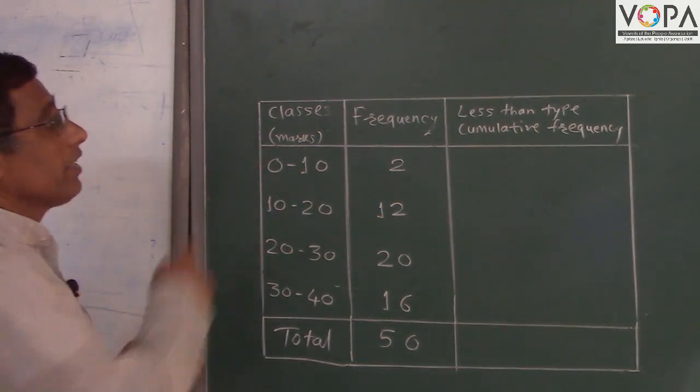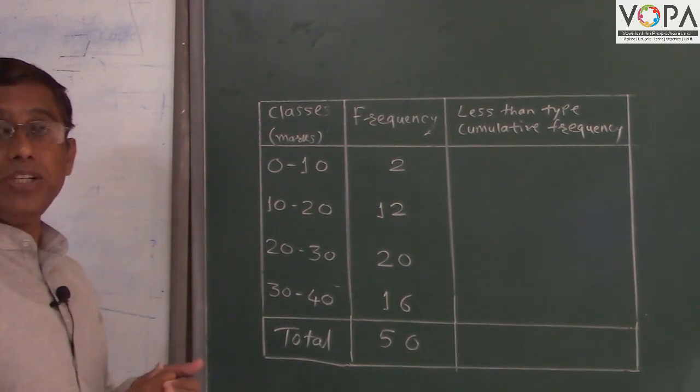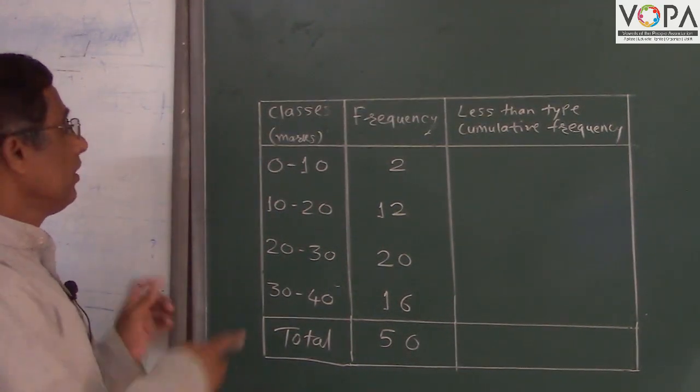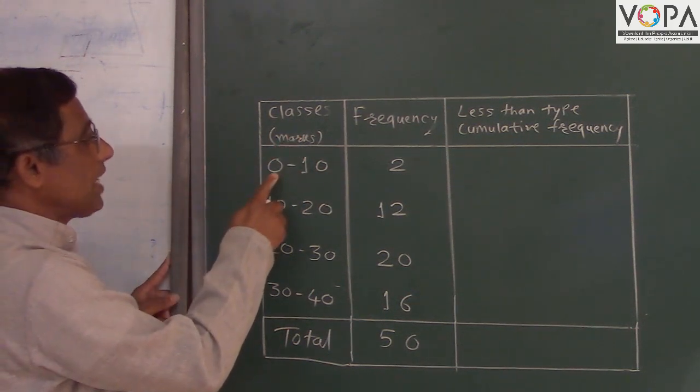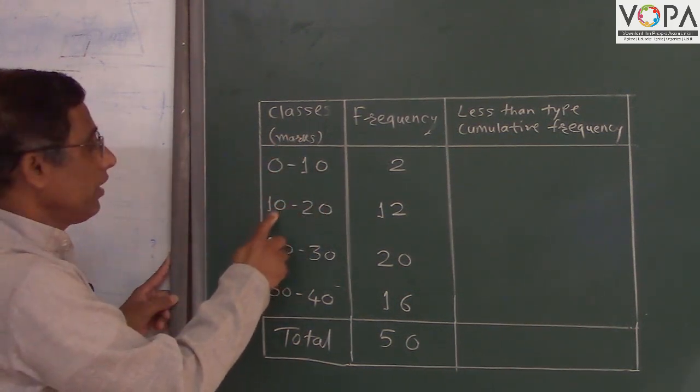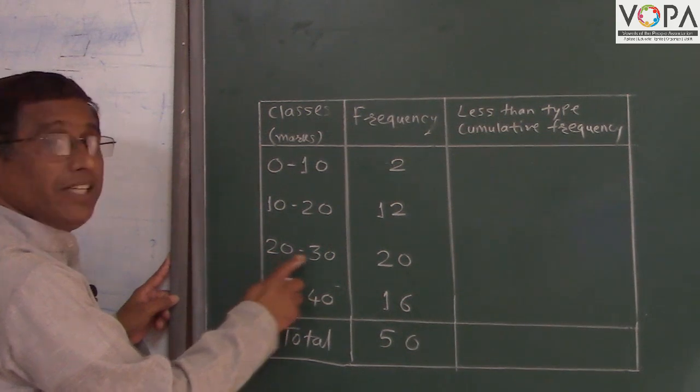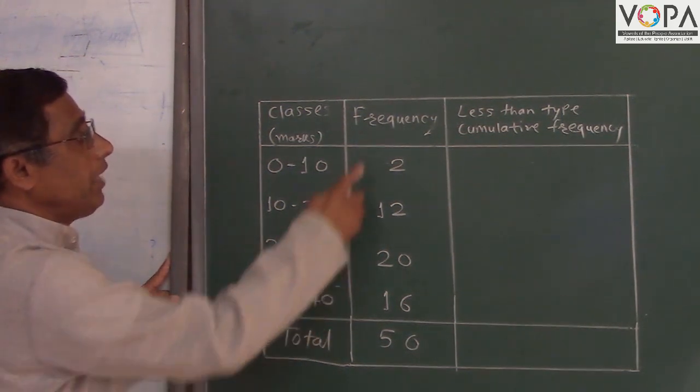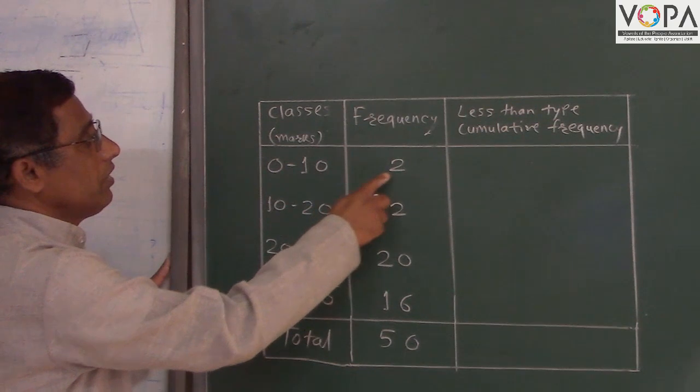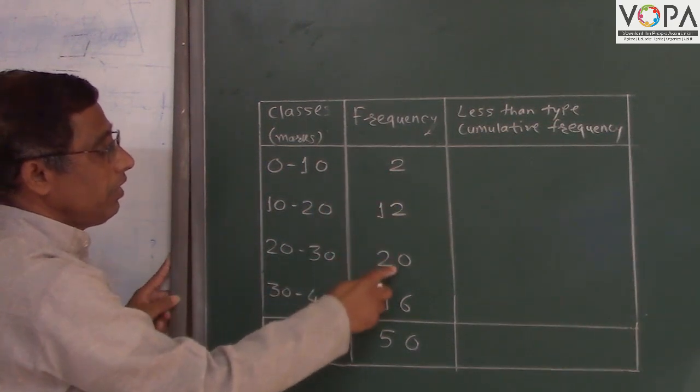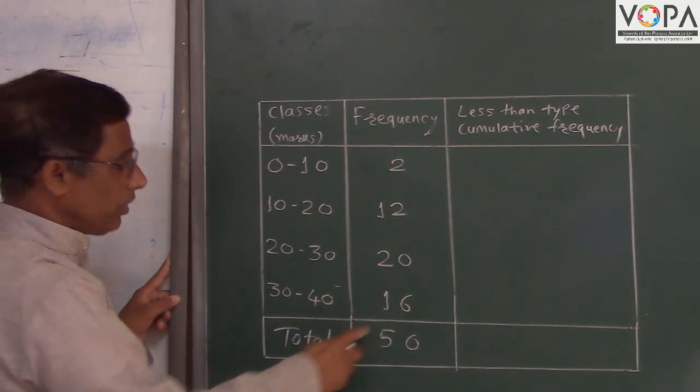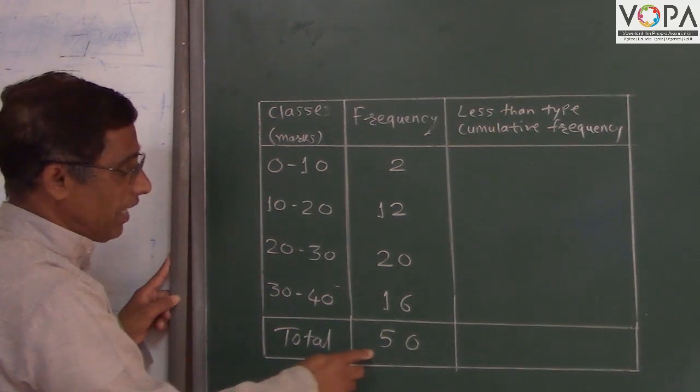Now we take less than type cumulative frequency table. We know class 0 to 10, 10 to 20, 20 to 30, 30 to 40 and we have given frequencies 2, 12, 20, 16. Total number of frequencies are 50.